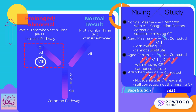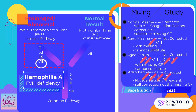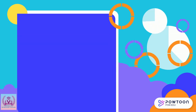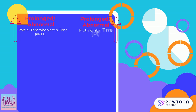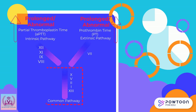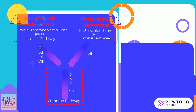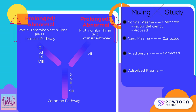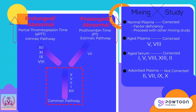Based on these results, coagulation factor 8 is the deficient factor in the patient's plasma, suggesting the patient may have Hemophilia A, which is a coagulation factor 8 deficiency disorder. For our second example, the patient's coagulation results show a prolonged aPTT and PT, suggesting a deficiency in the common pathway. After mixing studies: fresh plasma, aged plasma, and aged serum all corrected, while adsorbed plasma did not. Cancelling factors not in the common pathway leaves factors 1, 5, 2, and 10.